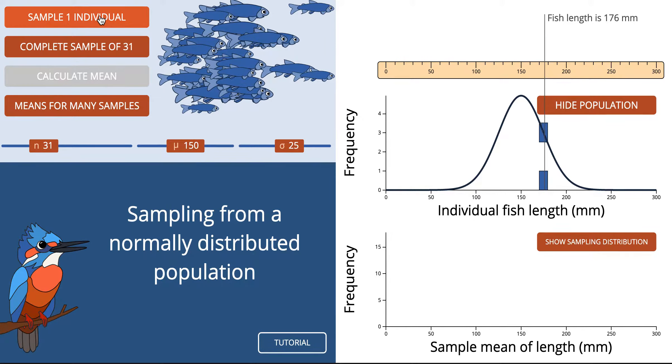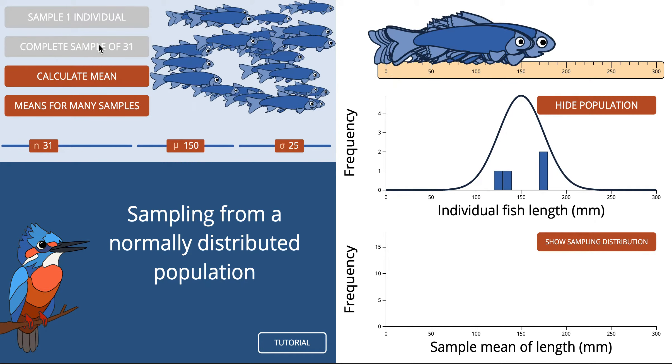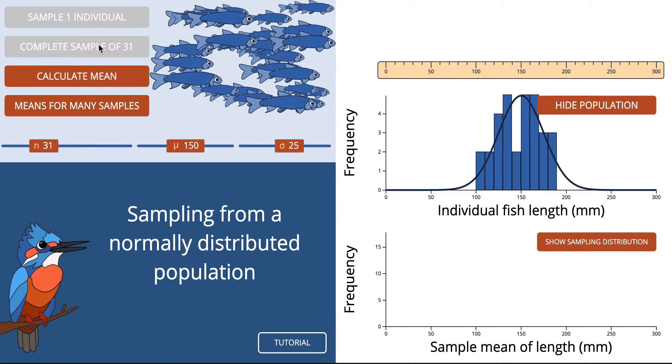But what happens is actually it's better if we take more than one fish. So that's the second fish we've got and here's a third fish. When we select individual fish, they kind of spread out amongst the population. But if I complete the sample of 31, so I change it to 31 rather than 30, and then we just drop down all of those individuals, it kind of mirrors the entire population.